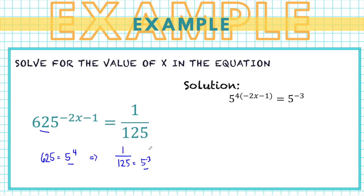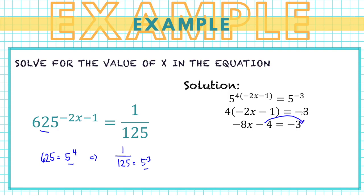We have the equation 5 raised to 4 times (negative 2x minus 1) equals 5 raised to negative 3. Since they have the same base, we equate the exponents: 4 times (negative 2x minus 1) equals negative 3. Using the distributive property gives negative 8x minus 4 equals negative 3. Transposing gives negative 8x equals 1. Dividing both sides by negative 8 gives x equals negative 1 over 8.